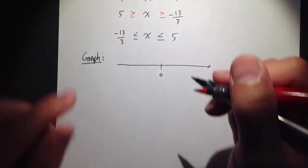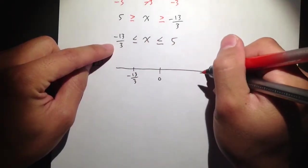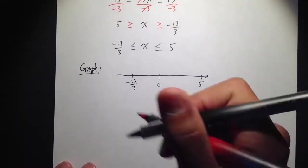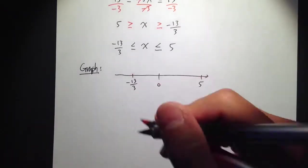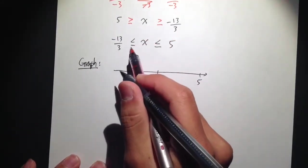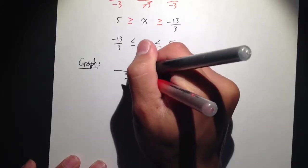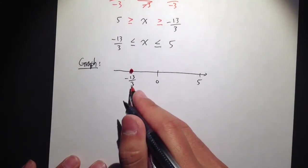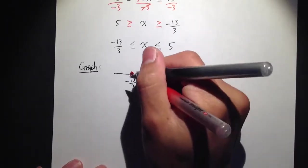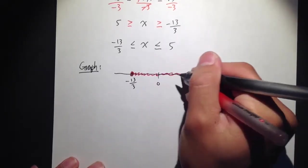Let me locate where 0 is. Negative 13 over 3 is right here, and 5 is right there. In our case we have less than or equal to. We have two ways to graph — I will show you both, but on exams or homework you just need to do one. Less than or equal to includes the number, so we put a closed circle at negative 13 over 3. Likewise, a closed circle at 5. X is in the middle, so we color in the middle, shading between the two points.